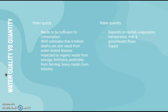Water quantity refers to the actual volume of water available, which depends on rainfall, evaporation, transpiration, river and groundwater flows — essentially the drainage basin cycle and the water cycle. It is simply the supply of water available. Be aware of the difference between these two terms.